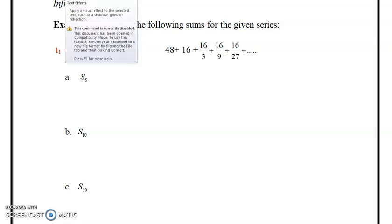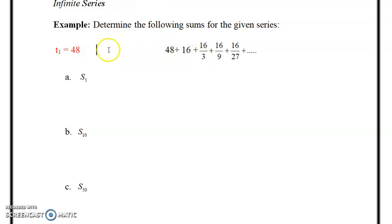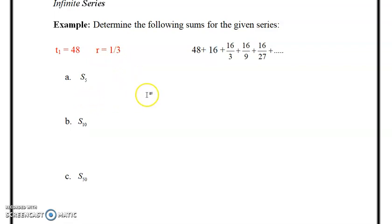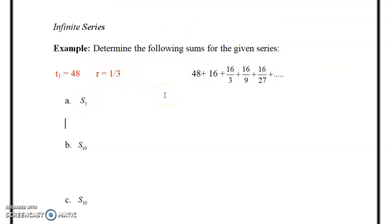We know t1 is equal to 48, and we also know the r value, not d, sorry r. We're in geometric here, and you can clearly see that you're dividing by three each time, so the r value is equal to one-third. 16 divided by 48 is a third, or you can clearly see that you're dividing by three, so it's either divided by three or the same as multiplying by a third.